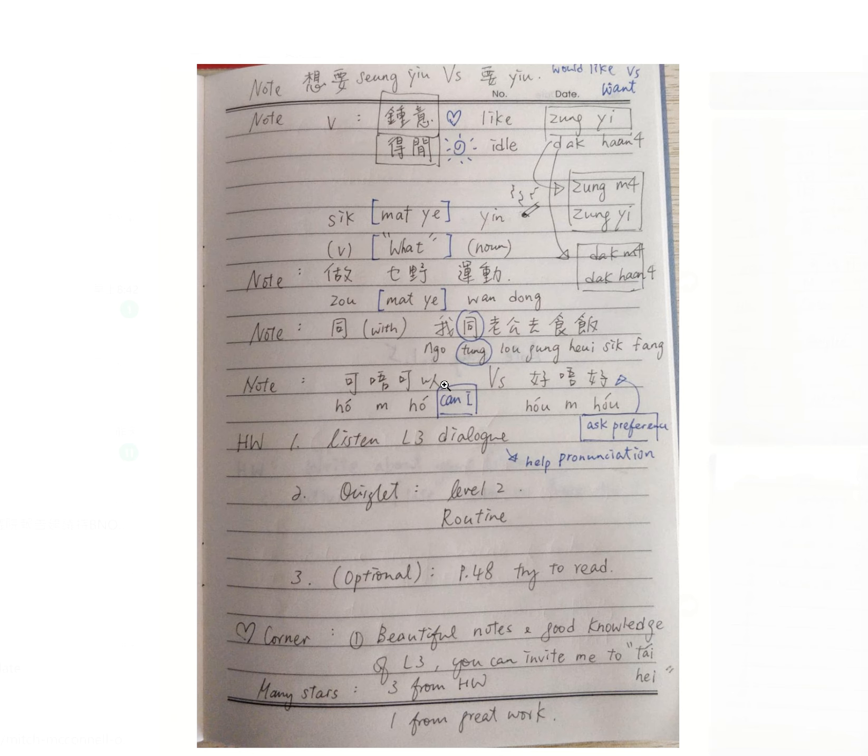For example, probably somebody likes to sing song and then you don't want that. 可唔可以唔好唱歌啊, and then you don't want somebody to sleep, 可唔可以唔好睡覺啊.